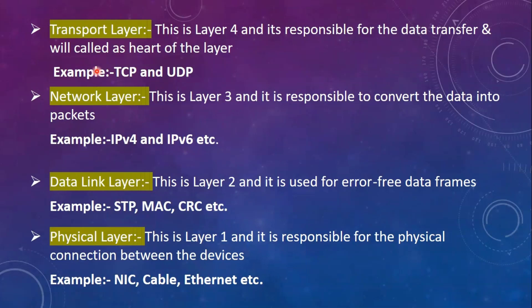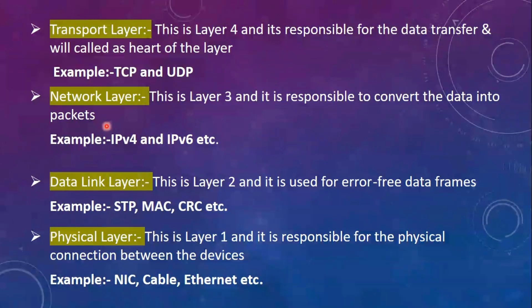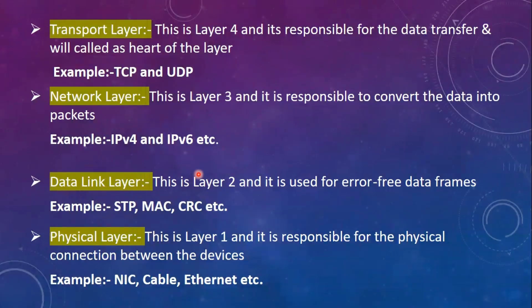Here is the Transport layer with TCP plus UDP — Transmission Control Protocol and User Datagram Protocol. Here is the Network layer, responsible for converting data into packets. This is IPv4, IPv6, plus router — this is Layer 3. Data link layer is for error-free transmission. Layer 2 devices like switches, bridges, STP, MAC — all are data link layer.